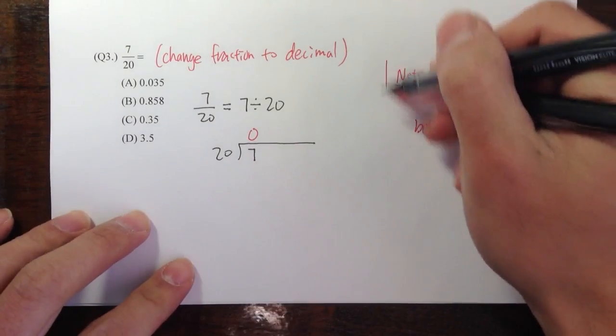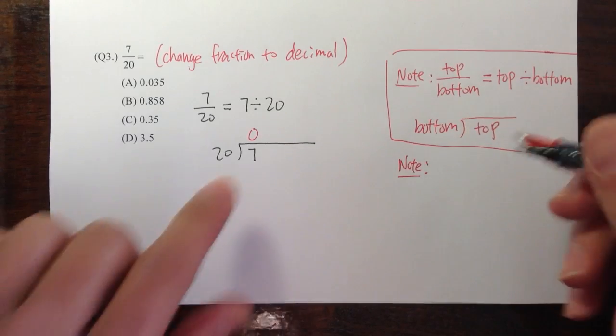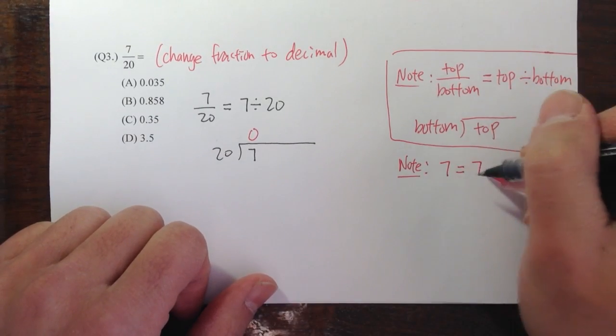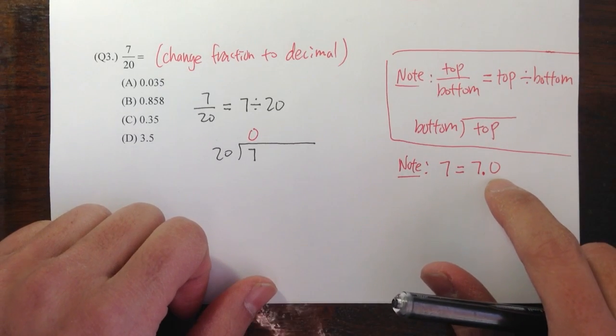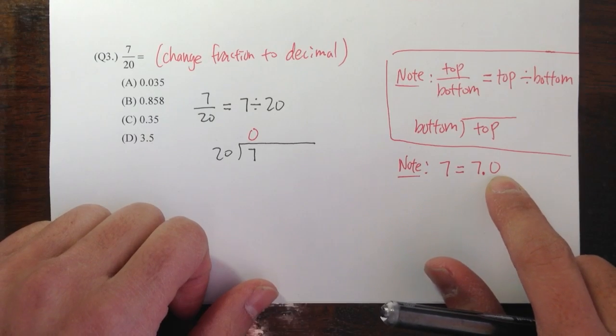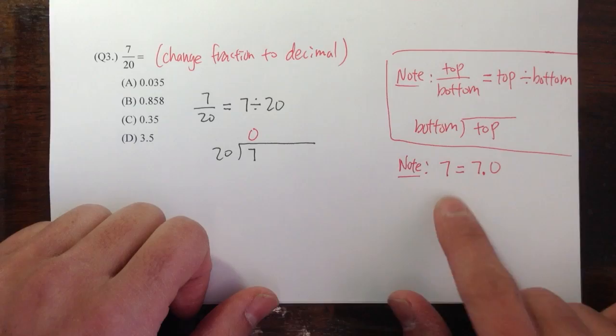So let me make another note on the side. The number 7, I can write as 7.0. I can add a decimal point and add a zero. I can have as many zeros as I would like after the decimal point, and it still will be the same value.